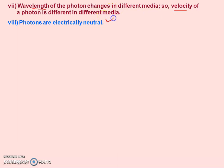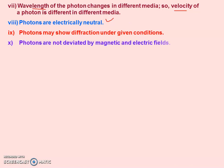Next, a photon is electrically neutral — since there is no charge particle, photons are always electrically neutral. Photons may show diffraction under given conditions. Photons are not deviated by electric and magnetic fields because they have no charge and are electrically neutral, so they cannot be deviated in electric and magnetic fields.